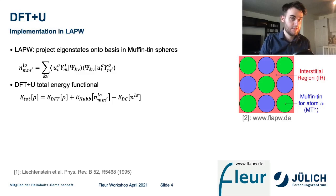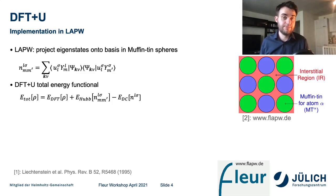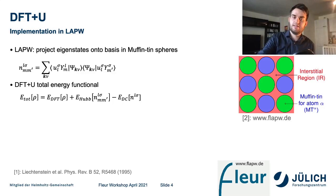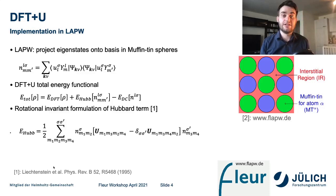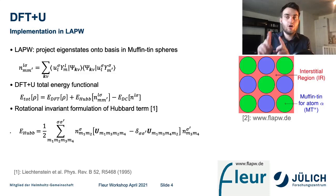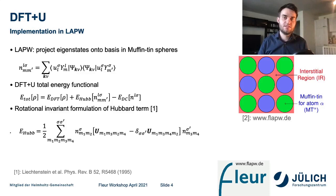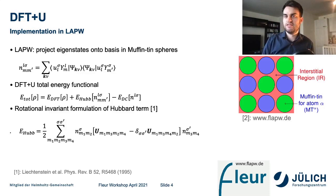We then correct our total energy functional with a term depending on this density matrix for the localized orbitals. To do that, we must subtract out any interactions previously covered for these localized electrons by LDA or GGA — this is the double-counting term E_DC. The Hubbard term takes the form from the paper by Lichtenstein, and it is rotationally invariant. This is important because the density matrix changes under rotation of atomic orbitals, and we don't want the total energy functional to change. This formulation is independent of the basis set used to project eigenstates onto the localized orbital.